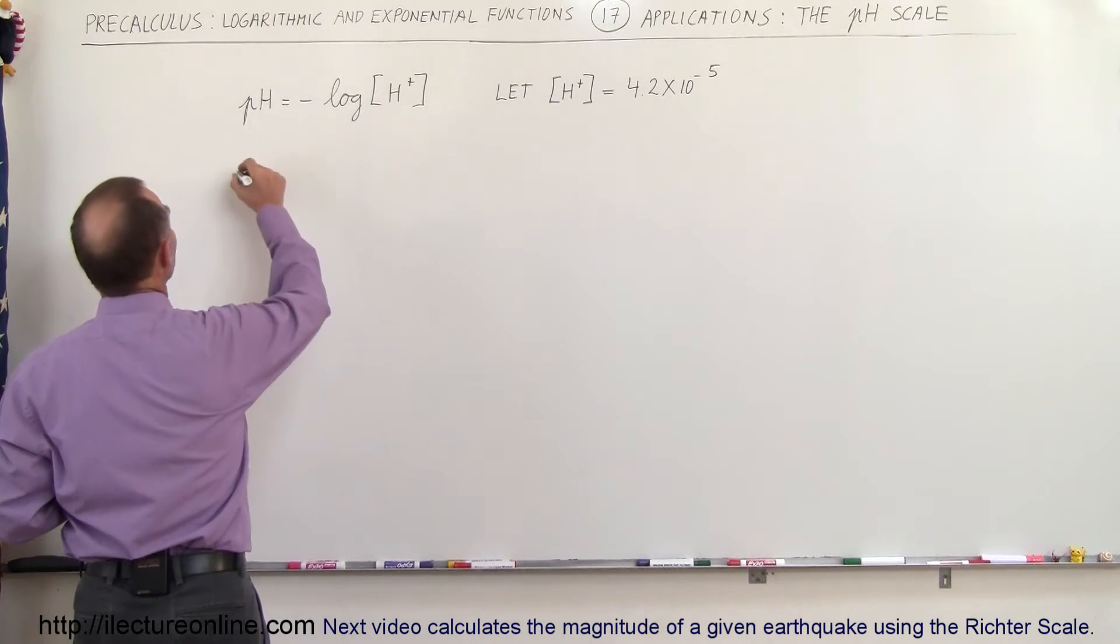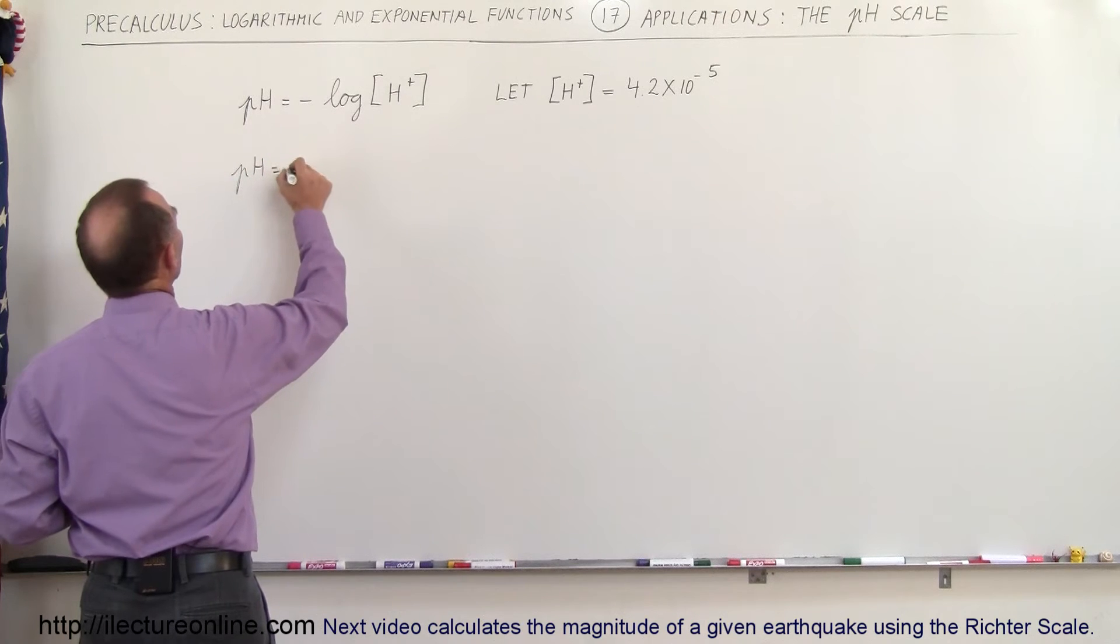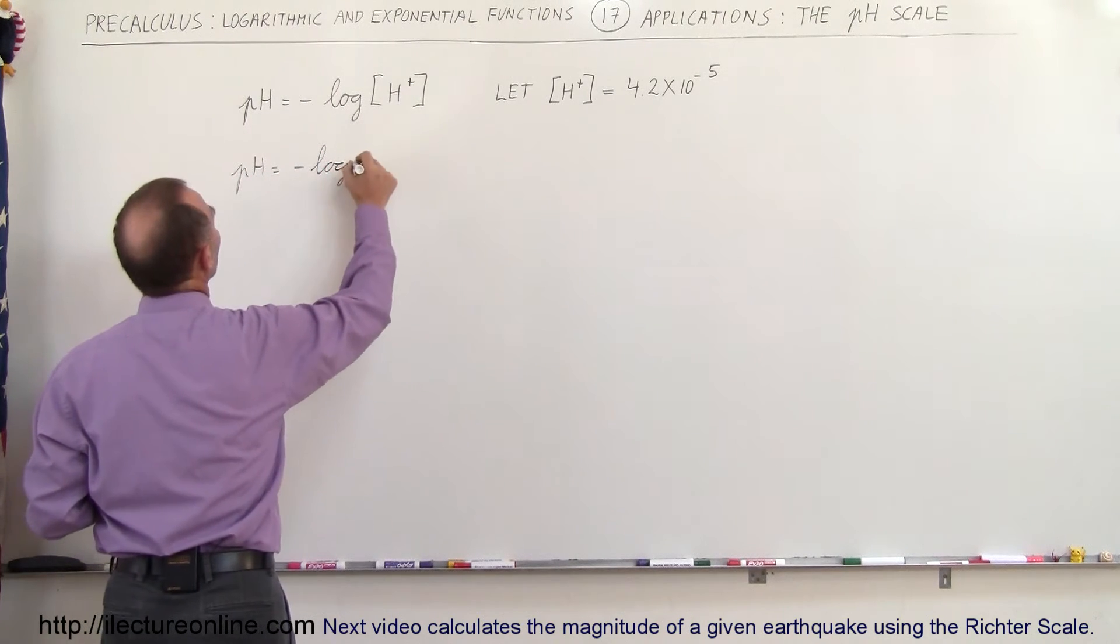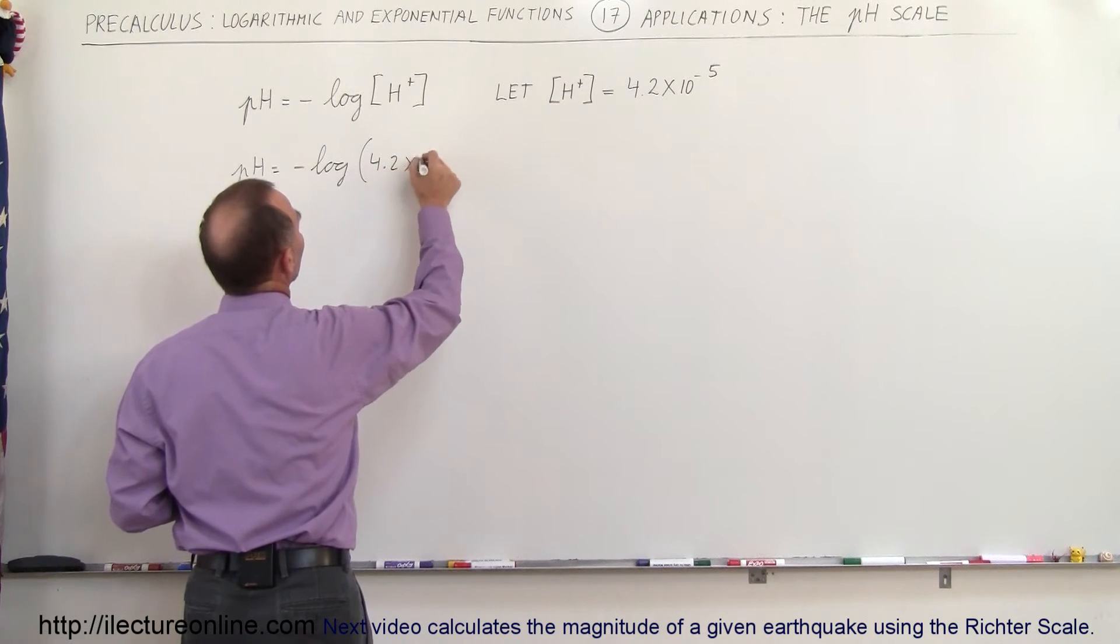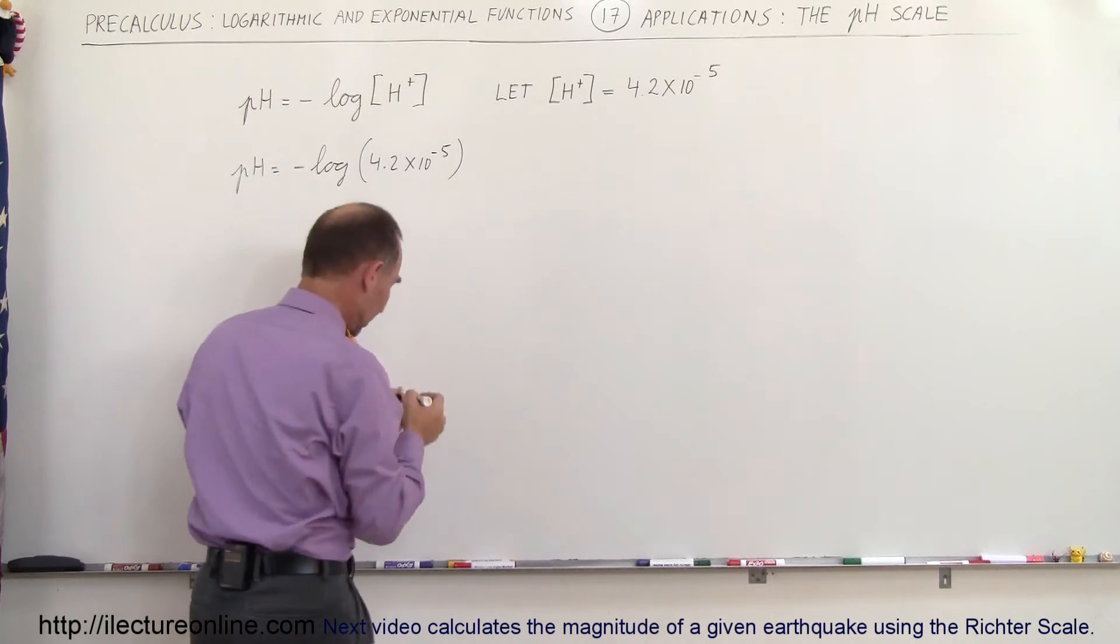So let's go ahead and calculate it. So we can say the pH is equal to the minus log of this concentration which would be in this case 4.2 times 10 to the minus 5. So let's see what that gives us.